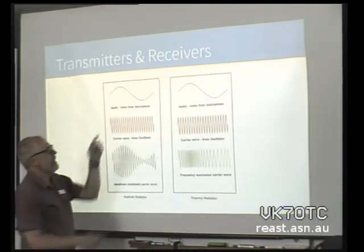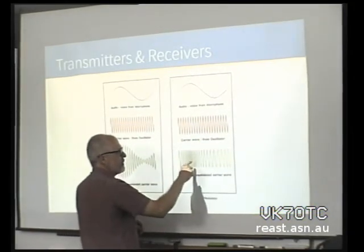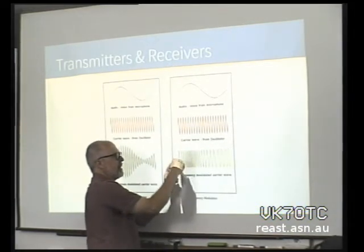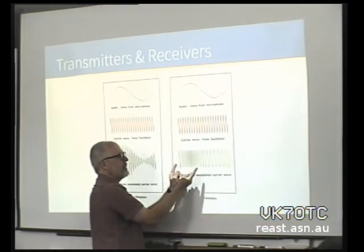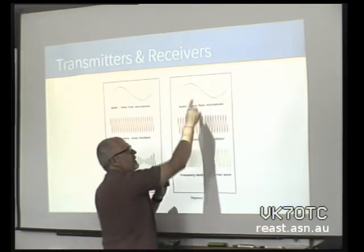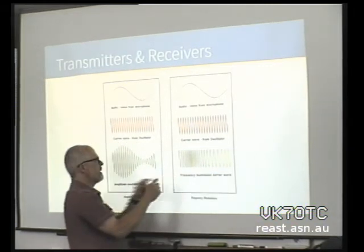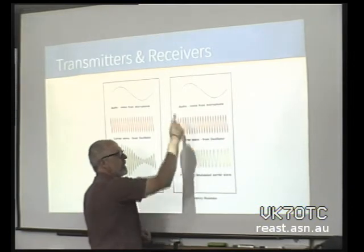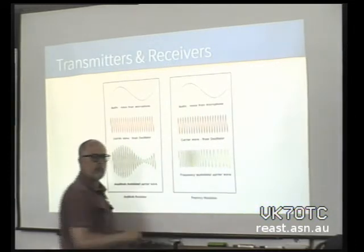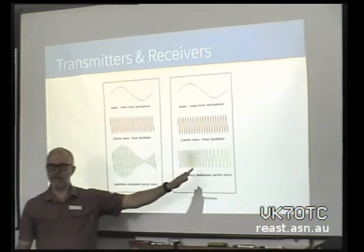The other way of modulating is — same voice, same carrier — but as my voice gets higher, you'll notice the number of cycles actually increases, so it's going up in frequency a little bit. Where my voice goes down, it's widening out or lowering the frequency. Nothing happens to the amplitude, but the frequency changes just slightly based on what my voice is doing. This is called frequency modulation — so this is AM, this is FM.